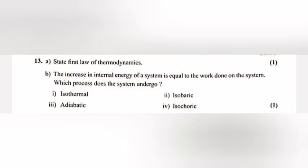Question 13b: The increase in internal energy of a system is equal to the work done on the system. Which process does the system undergo? Answer: 3. Adiabatic.